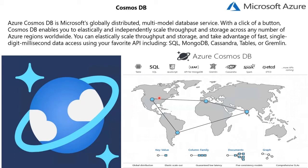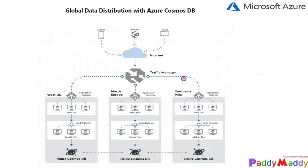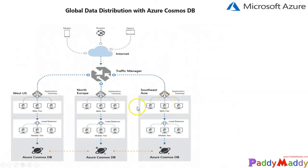The best examples of such applications would be Twitter or Facebook. Users can post their data anywhere and it would automatically replicate to Cosmos DB across different regions, so in terms of latency, there will not be any data loss.